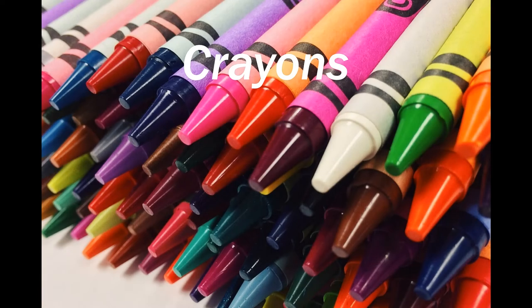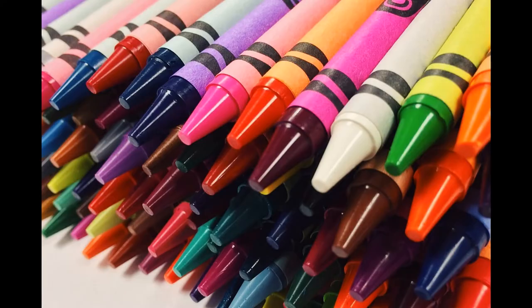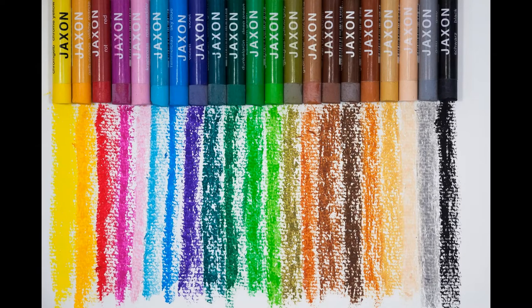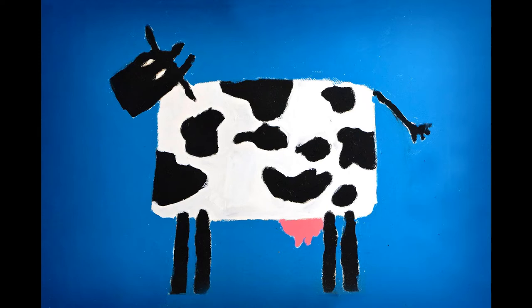Crayons. Very easy to use. Some kids might need to push extra hard when coloring. Oil pastels. It's like a softer crayon, easier to mix color. But compared to a crayon, it's not as transparent. It can be used on colored paper.